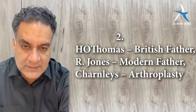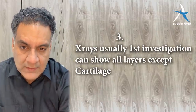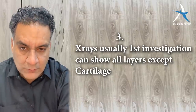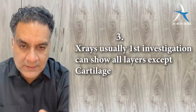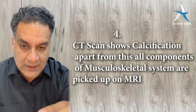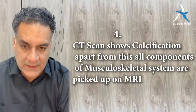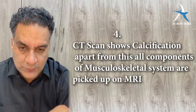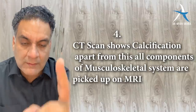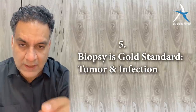Point number three: X-rays are usually the first radiological investigation done in orthopedics. They can show you almost everything in the musculoskeletal system except cartilage. Point number four: CT scan is very good for calcification, but the musculoskeletal system is largely dominated by MRI. In the majority of orthopedic conditions, MRI is the investigation of choice. Point number five: when you need a gold standard, tissue diagnosis is the most important.